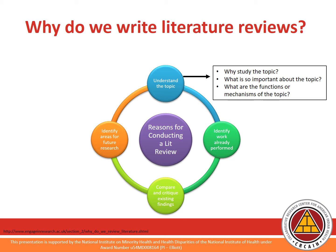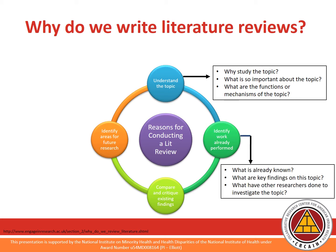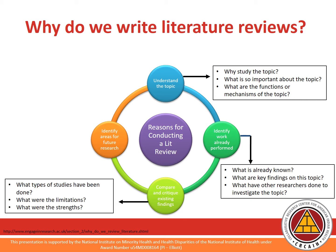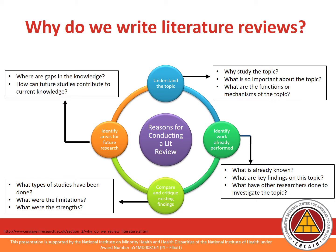You may also seek to identify what has already been done on the topic — what is already known, what are key findings, or what have other researchers done to investigate the topic? You may also perform a literature review to compare existing findings in the topic area, such as what types of studies have been done and the limitations and strengths of each. All of these lead to identifying areas for future research, such as gaps in the current literature and how future work can contribute to current knowledge.